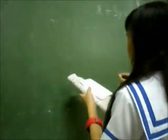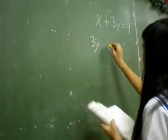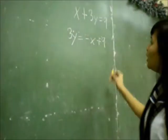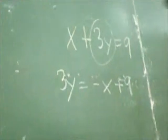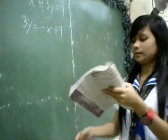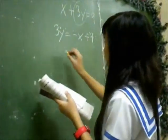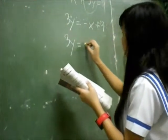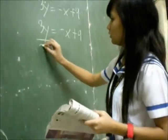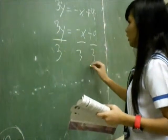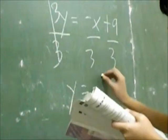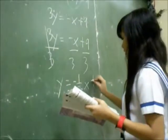We have 3y equals negative x plus 9. To isolate y, divide all terms by 3. So y equals negative one-third x plus 3.